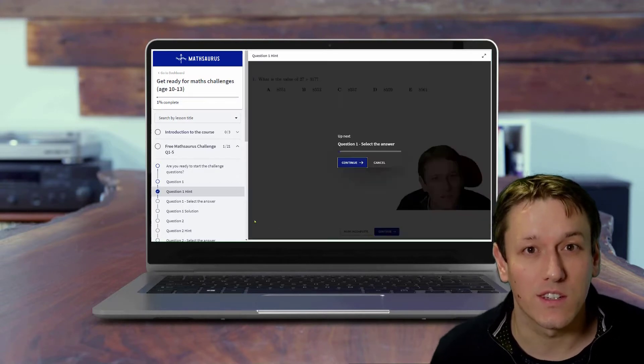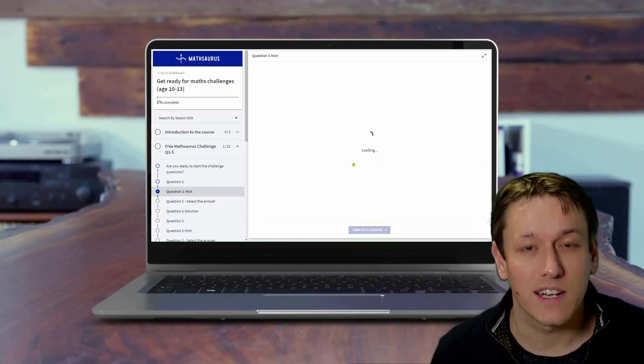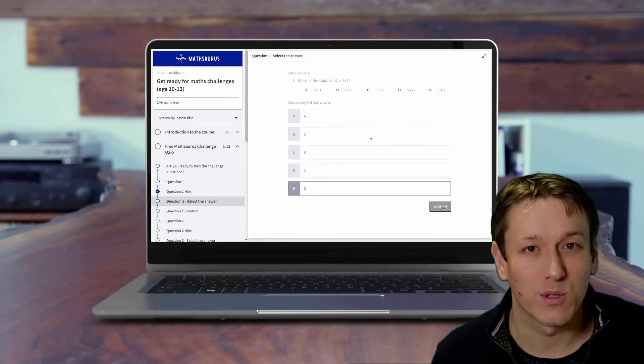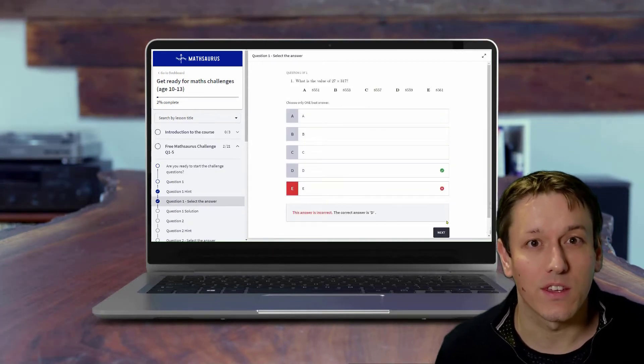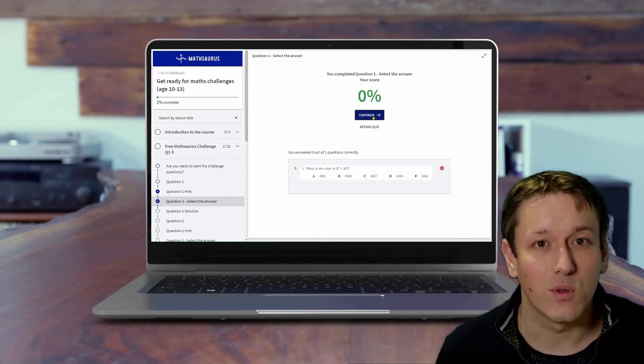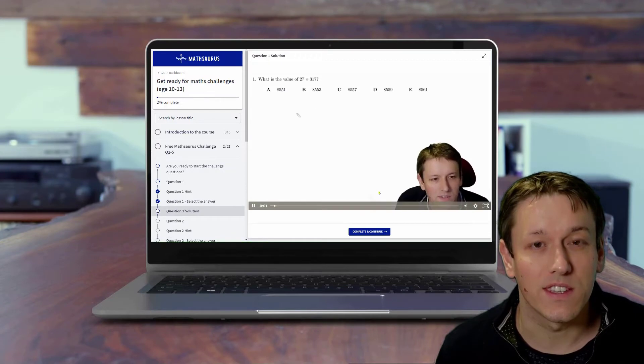Once you think you've got the answer, you can choose the answer from a selection of multiple choice options on the screen. It'll tell you whether you're right or wrong, then you can either have another go at the question if you got it wrong, or watch my video solution if you are really stuck or if you want to see if there's another way of solving the problem apart from the way that you did it.